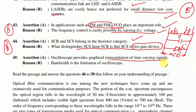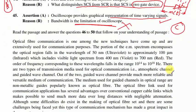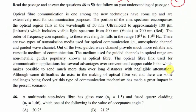Question 45: oscilloscopes provide a graphical representation of time-varying signals — true. Reason: bandwidth is a limitation of the oscilloscope — bandwidth is NOT a limitation. Option C is correct.